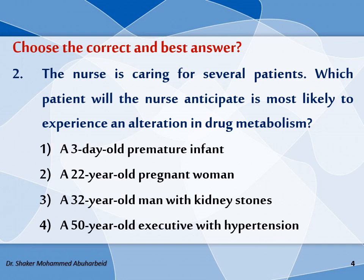The first option: a three-day-old premature infant. The second option: a 22-year-old pregnant woman. The third option: a 32-year-old man with kidney stones. And finally, a 50-year-old executive with hypertension.